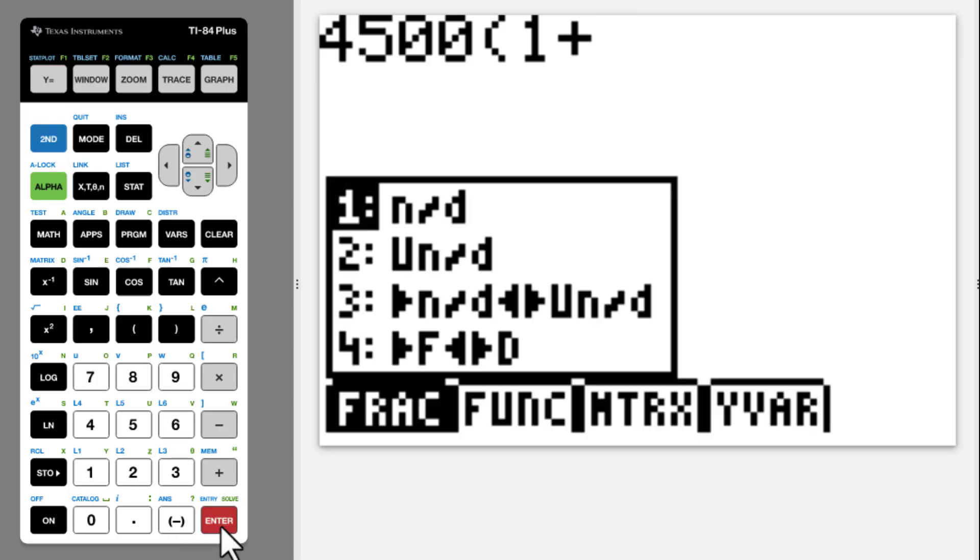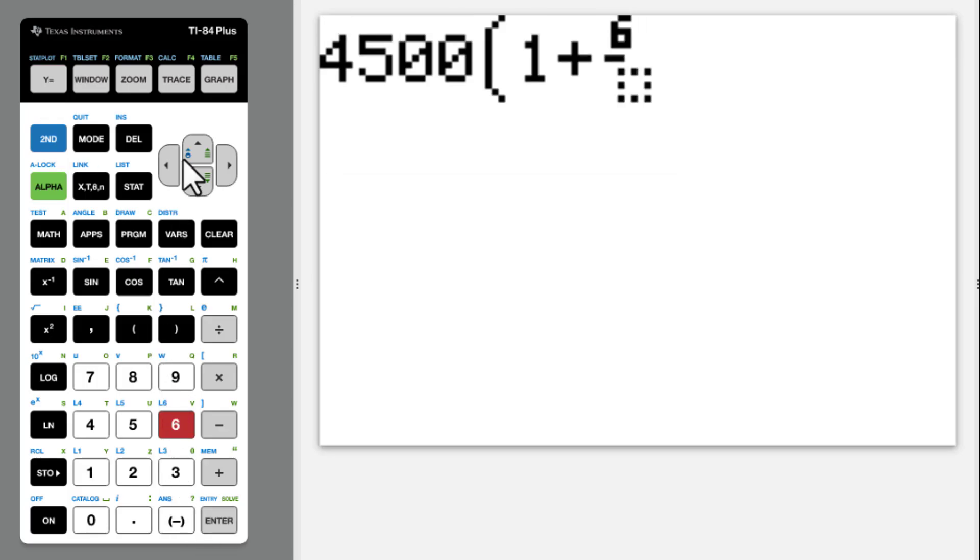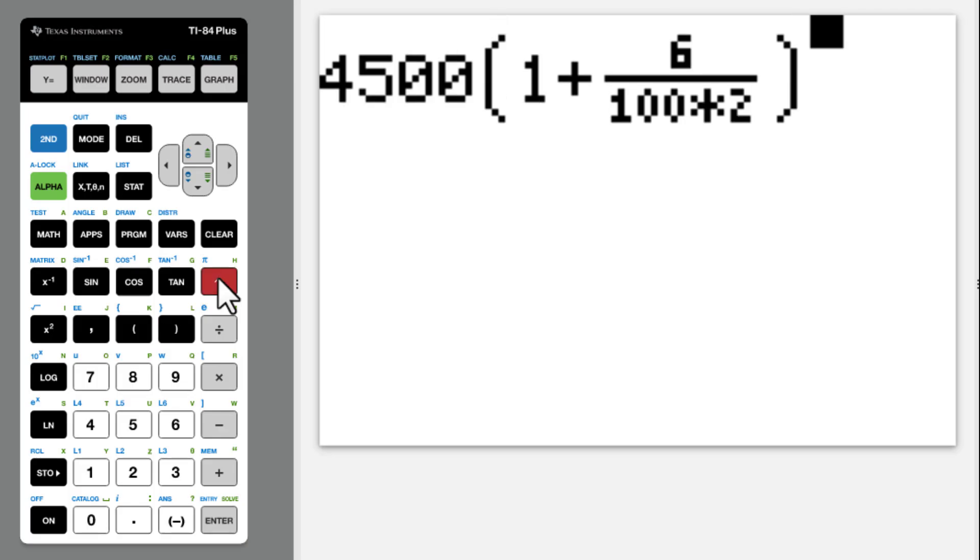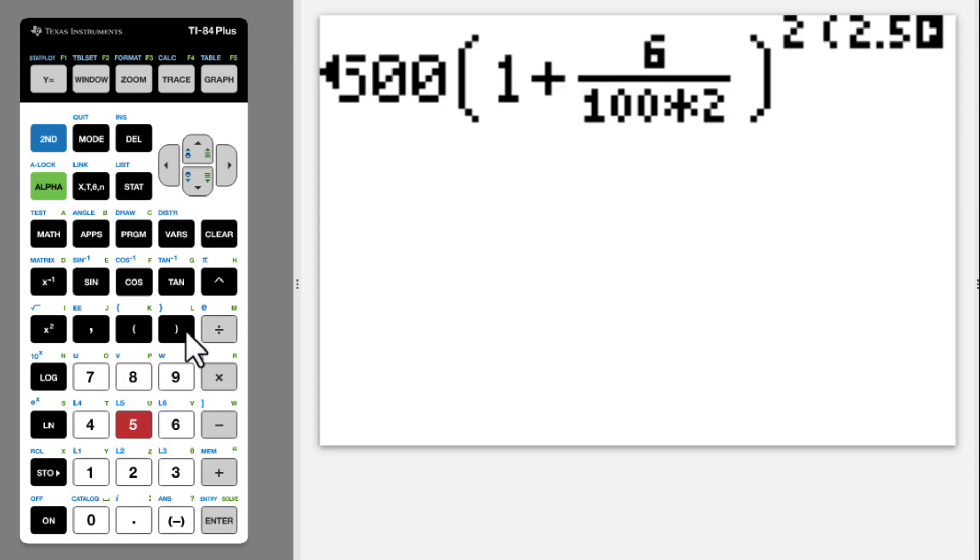Then 2 times 2.5. Go to 4500 times 1 plus 6 over 100 times 2 to the 2.5. Go to 4500 times. Enter.